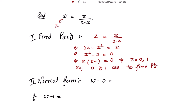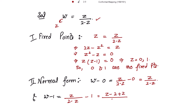To get the normal form, we subtract each fixed point from the given transformation. Subtracting the first fixed point zero: w - 0 = z/(2 - z). Subtracting the second fixed point one: w - 1 = z/(2 - z) - 1 = (z - 2 + z)/(2 - z) = (2z - 2)/(2 - z). Let's mark these as equation 1 and equation 2.